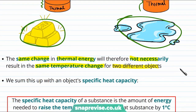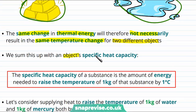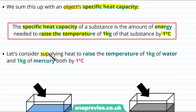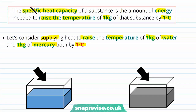We can sum up this idea with the object's specific heat capacity. The specific heat capacity of a substance is the amount of energy that you need to raise the temperature of one kilogram of the substance by one degree centigrade. Let's consider supplying heat to raise the temperature of one kilogram of water and one kilogram of mercury both by one degree centigrade, which by definition gives us the specific heat capacity.